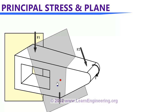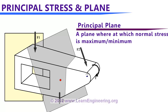Similarly, there will be one more plane passing through the same point on which normal stress value will be minimum. This is also a principal plane — more precisely, the minimum principal plane. The normal stress on that plane will be known as minimum principal stress. In short, a principal plane is a plane at which normal stress value is maximum or minimum.